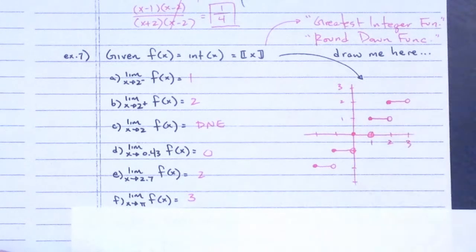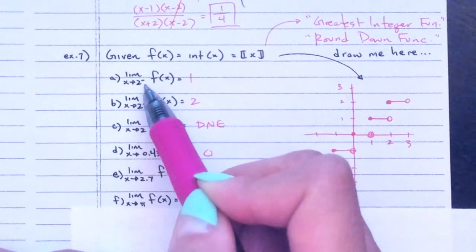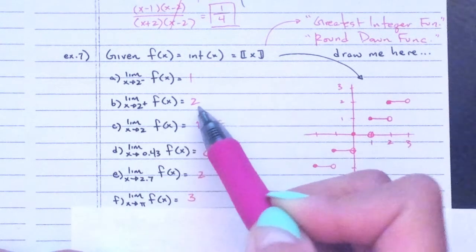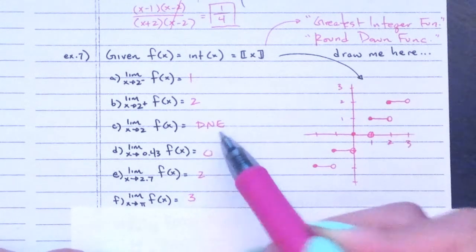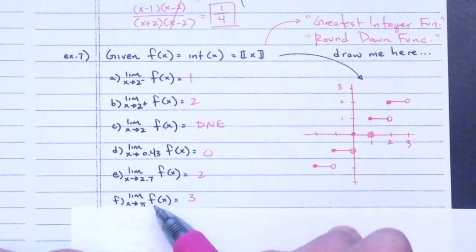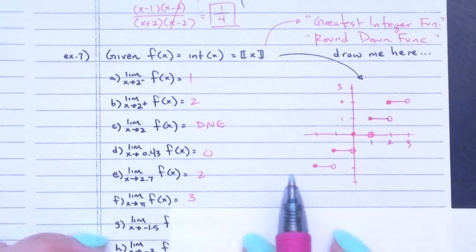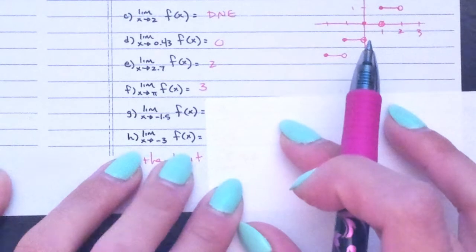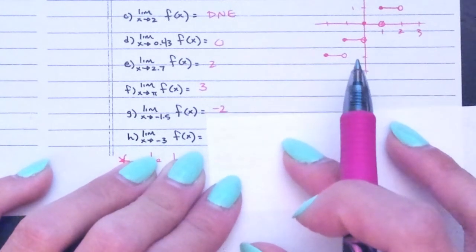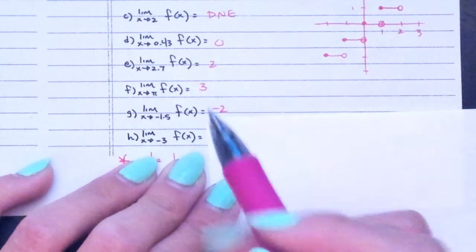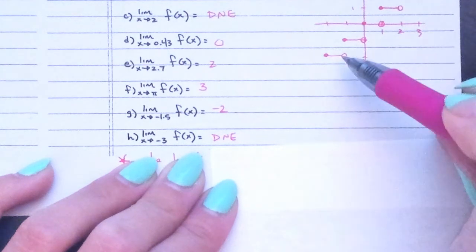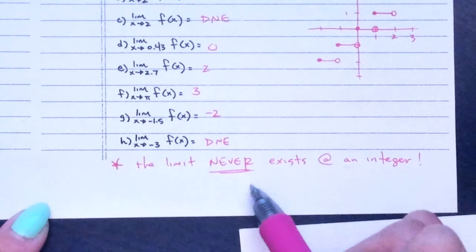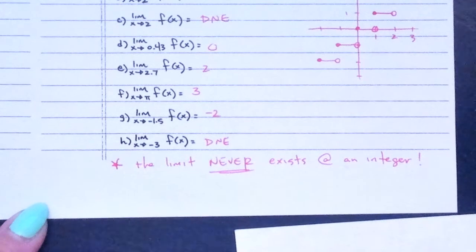Without a graph: the left side of 2 is like 1.9, which rounds down to 1; the right side is like 2.1, which rounds down to 2. Left limit is 1, right limit is 2 — not the same, so the limit does not exist. For negative 1.5, you round down to negative 2 because smaller numbers are to the left. The limit never exists at any integer because there is always a step there.